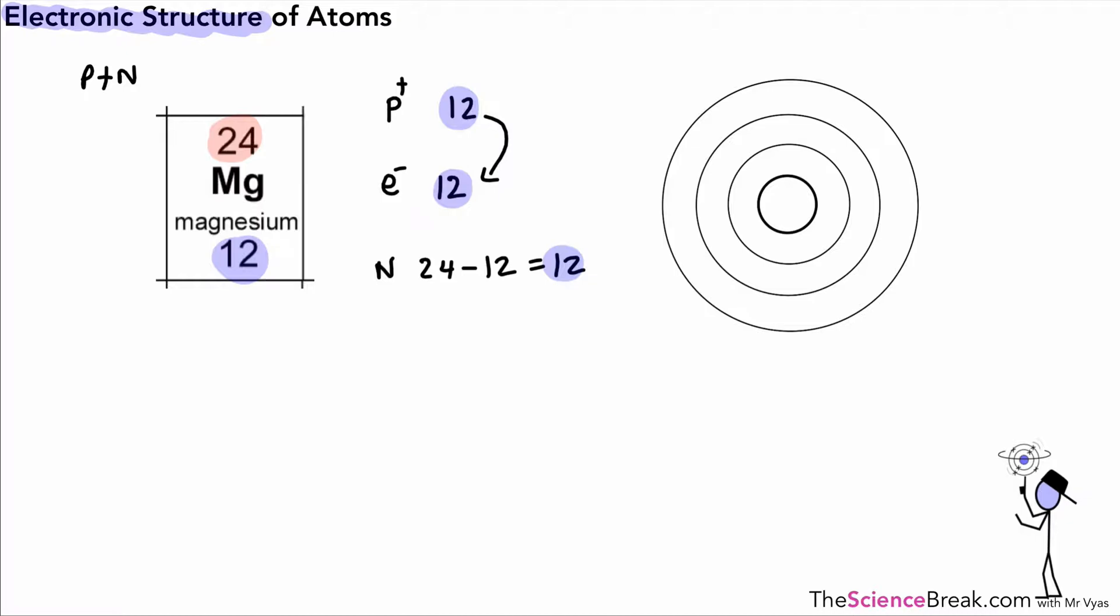Now we can then add these to our diagram. So we said the protons and neutrons live in the nucleus, so we can say 12 protons and 12 neutrons in the nucleus there. And then we can add on our electrons. We said there was a rule to how we added on the electrons: we have a maximum number of two in the first shell.